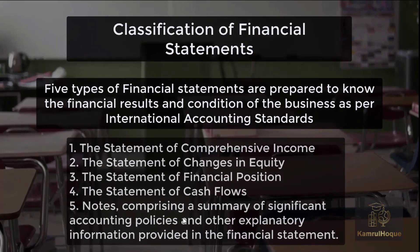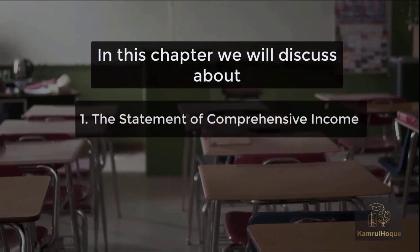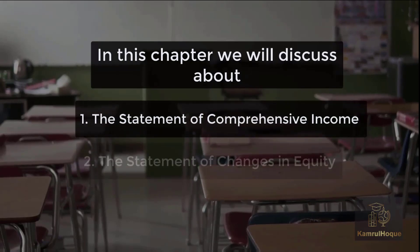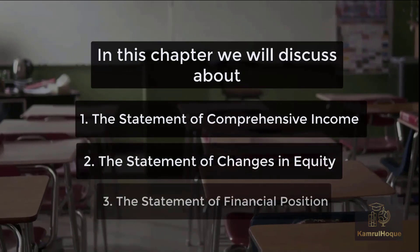In the financial statements, we show which policies are maintained and any necessary explanations in the notes. In this chapter, we will discuss three statements: number one, the statement of comprehensive income; number two, the statement of changes in equity; number three, the statement of financial position. We will discuss these one by one.